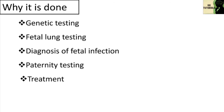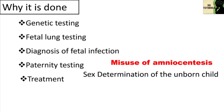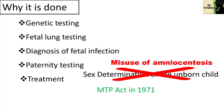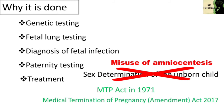In this procedure, chromosomes are studied to see abnormalities in the developing fetus. However, the dangerous trend is the misuse of amniocentesis to determine the sex of the unborn child. Frequently, if the fetus is found to be female, it is aborted, which is totally illegal. The Government of India enacted the MTP Act in 1971 with strict conditions to avoid its misuse. The Medical Termination of Pregnancy Amendment Act (MTP Act 2017) under Section 3 of the MTP Act 1971 was enacted to reduce the incidence of illegal abortion and consequent maternal mortality.